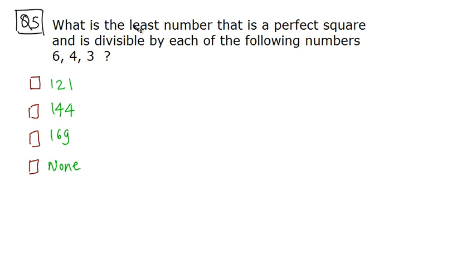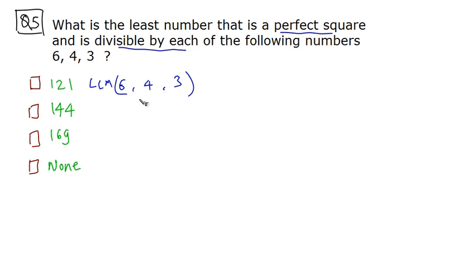Let's solve our last question: what is the least number that is a perfect square and is divisible by each of 6, 4, and 3? If a number is divisible by each of these numbers, it must be a multiple of their LCM. So we first find the LCM of 6, 4, and 3. But the question asks for the least perfect square divisible by that LCM.